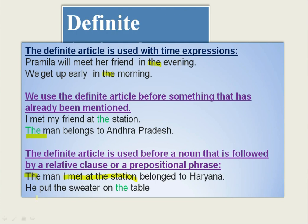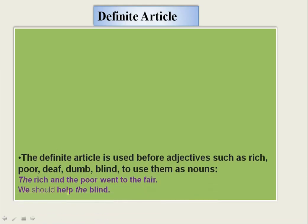Similarly, 'He put the spoon on the table.' There are two articles in this sentence: 'the spoon' and 'the table.' The phrase 'on the table' is a prepositional phrase. The rule is: we use the definite article before a noun followed by a prepositional phrase. 'The spoon' is a noun followed by 'on the table,' a prepositional phrase. Therefore, we use the article 'THE'.